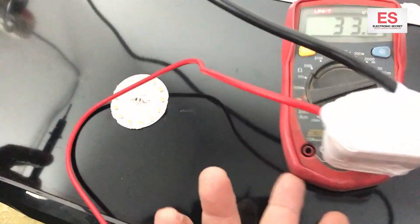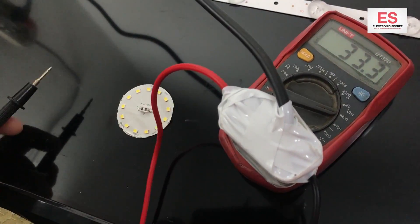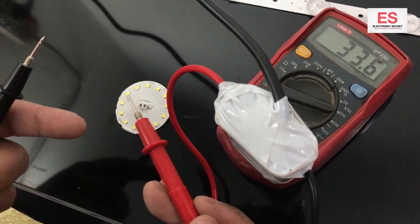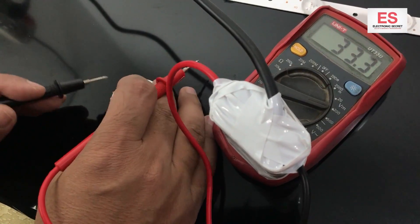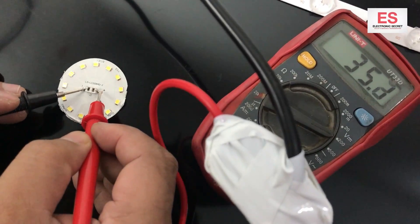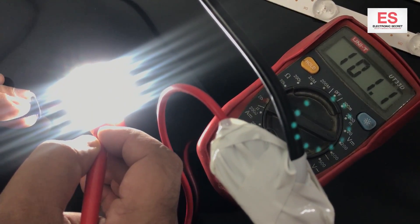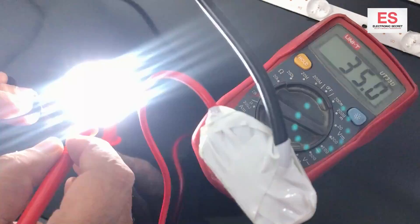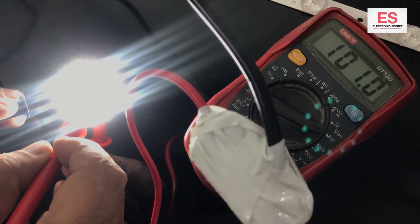Now take the black and red probe and place it on the minus and plus signs on the bulb strip. You can see that all the bulb strip is glowing and 100 volts is showing on the meter. So our tester is working fine.